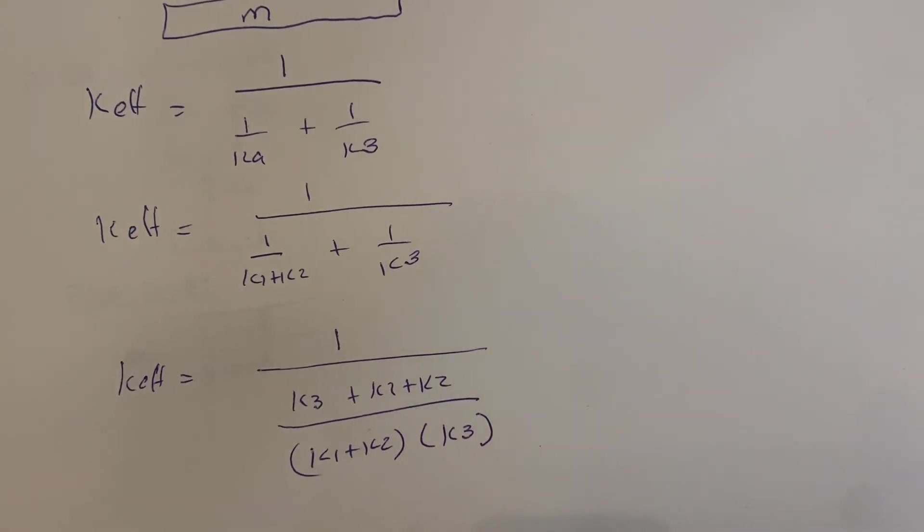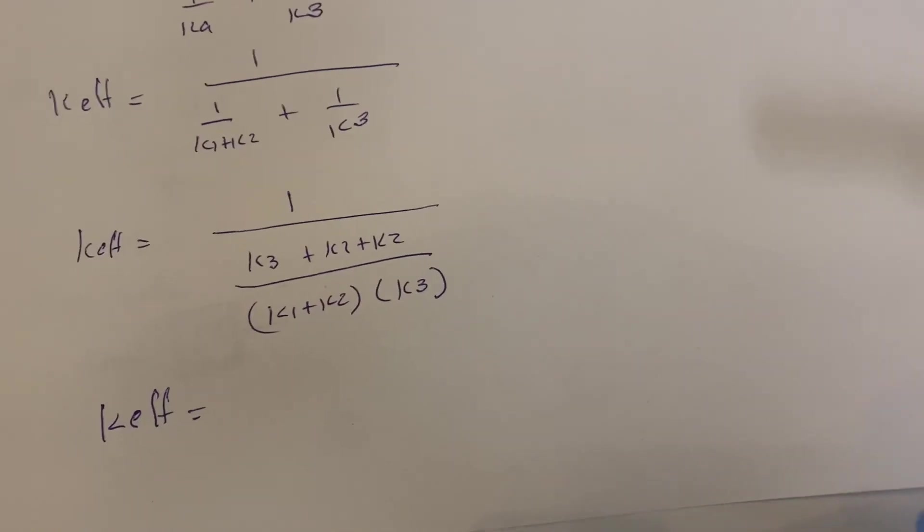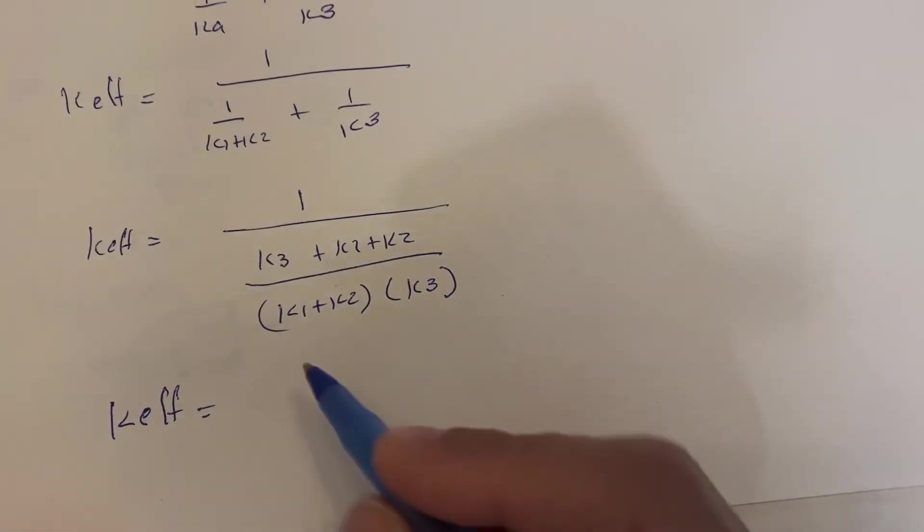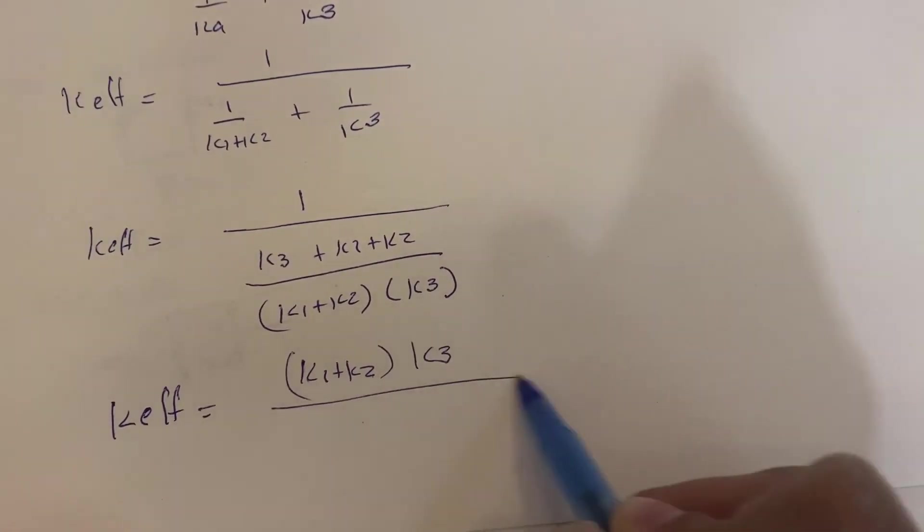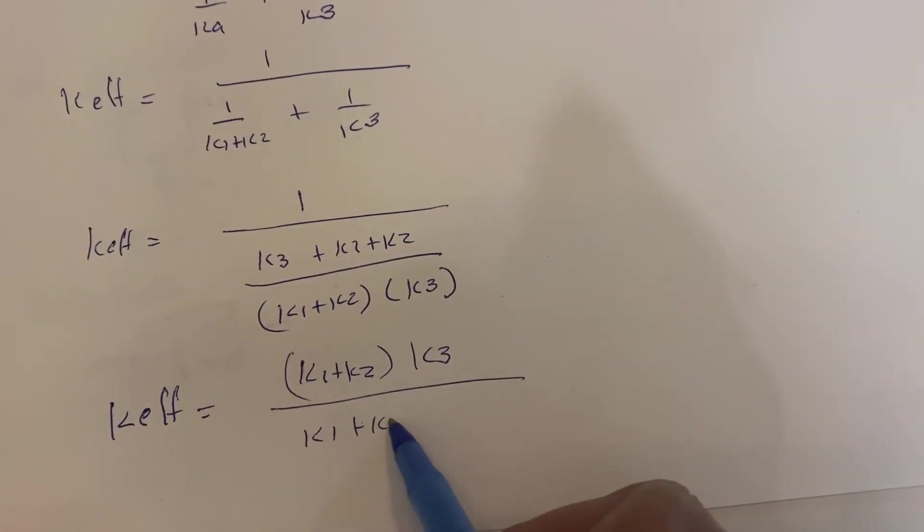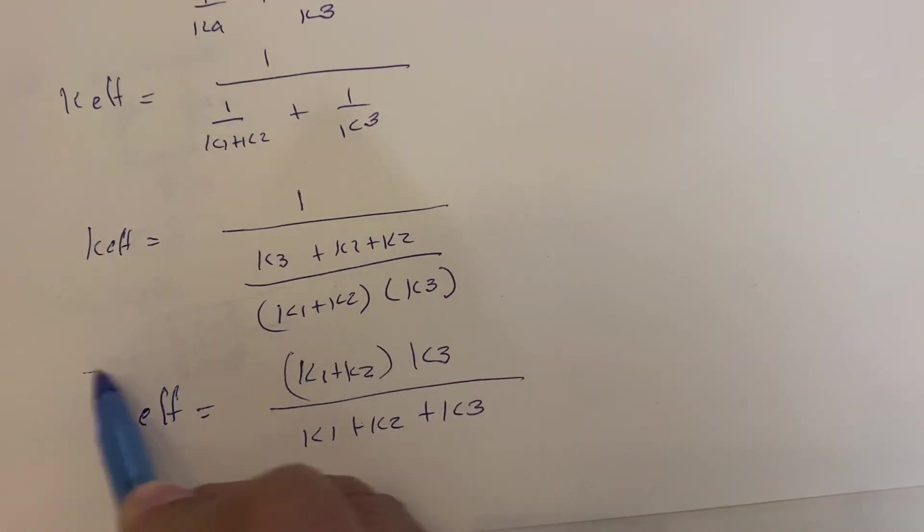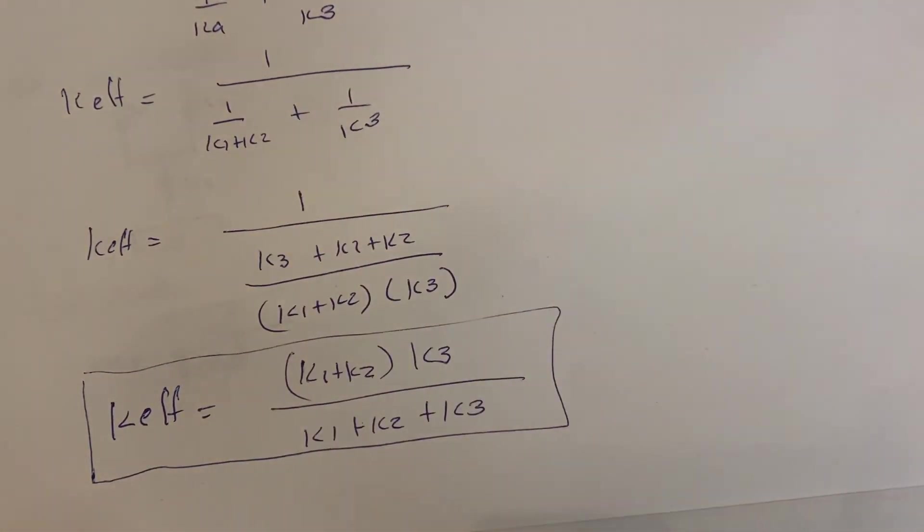If we take the reciprocal of this equation, we're going to get the effectiveness of the system. So, let's do that. Then, take the reciprocal, and we're going to have a final value or expression like this. And that will be the effective stiffness of our system.